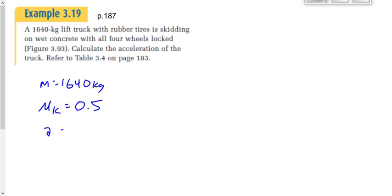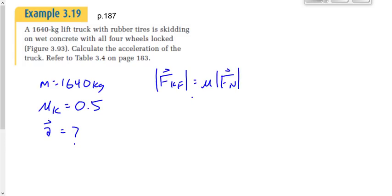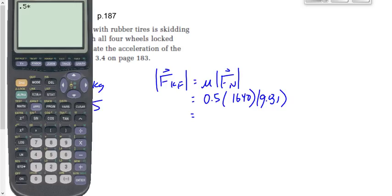We want to find the acceleration. F_kf equals mu times the normal force, which is mu times M times G: 0.5 times 1640 times 9.81 gives us 8,044.2 newtons. That's not our final answer — now we use F equals M times A, or A equals F over M. The force is 8044.2 newtons and the mass is 1640, giving us 4.9 meters per second squared.